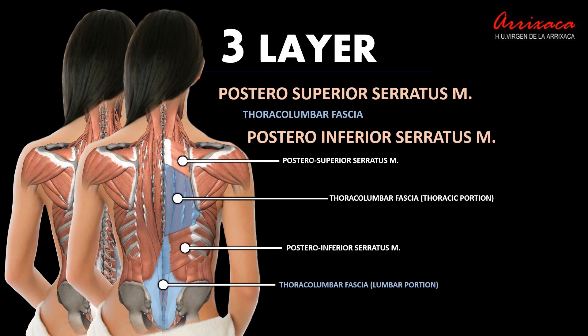Two muscles that anesthesiologists often do not take into account when discussing the posterior thoracolumbar wall are the superior and inferior serratus posterior muscles. This is most likely because our planes of exploration are carried out at points where this muscle is not present. However, a very important aponeurotic fascia extends between them — the thoracolumbar fascia — which represents, for many anatomists, the anatomical continuity of the thoracolumbar fascia at the thoracic level.